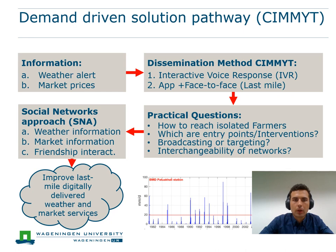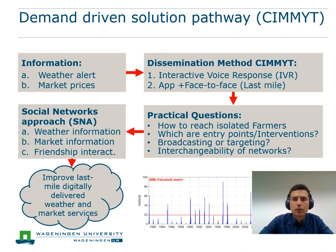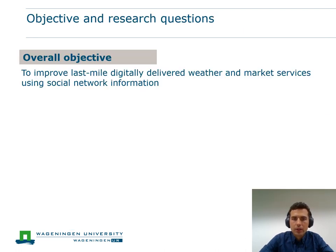How to reach isolated farmers? Which are entry points for information interventions? Can we use networks interchangeably for the dissemination of different kinds of information? In other words, can we rely on key people in the networks to deploy information from apps in such a way that they reach large numbers of farmers through person-to-person information sharing? Based on the information we want to spread, we decided to look at three different social networks, including weather and market information networks and a friendship interaction network. These considerations led us to the overall objective: to improve digitally delivered weather and market services to mung bean farmers in coastal Bangladesh by using social network analysis.